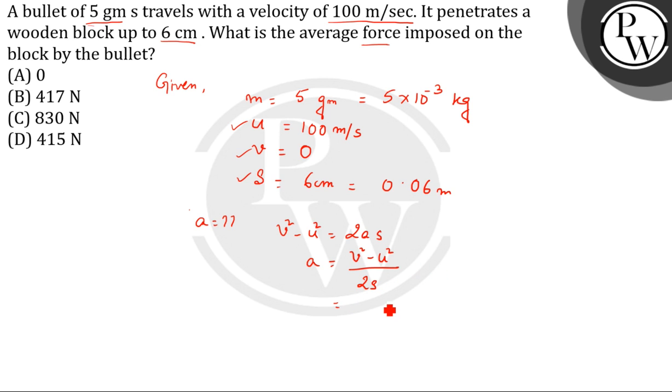v is 0 and u is 100. This gives us (0 - 100²) / (2 × 0.06), which equals -10⁴ / (12 × 10⁻¹).